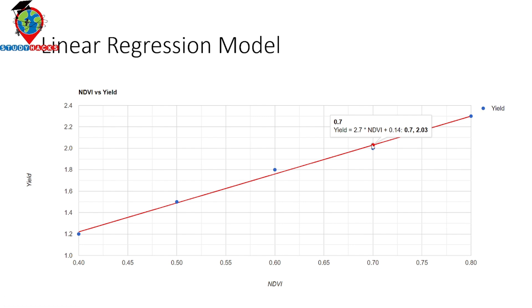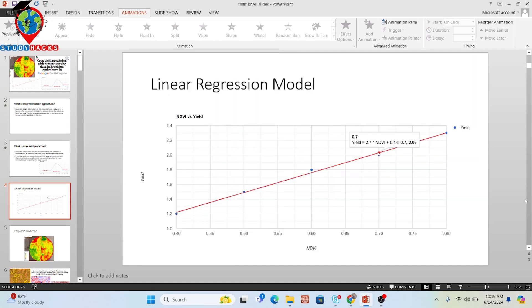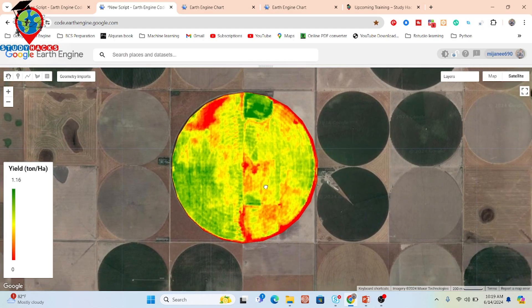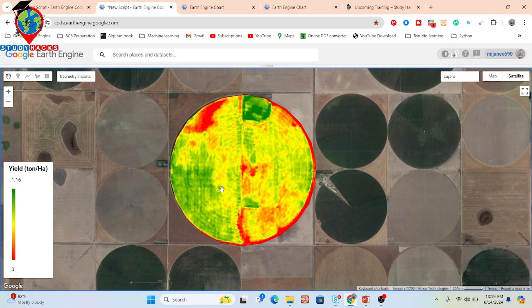When you want to add more parameters such as weather data, climate data, soil characteristics, or any crop genetics data, we have to apply a multiple linear regression. Then we can get a more accurate crop yield prediction. Now let's check the code. I will explain all of these things one by one. Here you can see this is our map for the crop yield prediction.